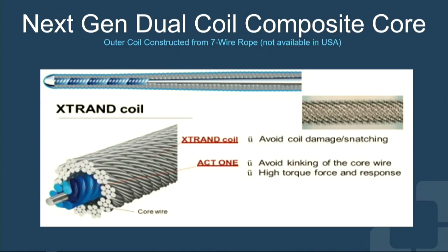There is a next-generation dual coil composite core construction, not yet available in the United States but available in other countries. What Asahi has done is use the same dual coil, dual core construction, but the outer coil, instead of being a single wire wrapped around the core, is actually constructed out of a rope of smaller wires. The idea is to avoid that tendency for the coil to break. I haven't had any practical experience with this yet, but it's something coming soon.